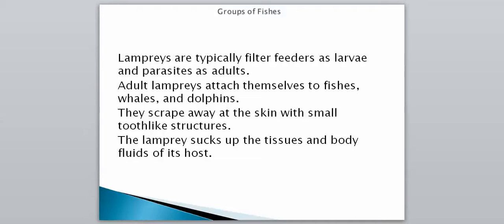Adult lampreys attach themselves to fish, whales, and dolphins, scraping away at the skin with small tooth-like structures. After scraping, they attach and suck up the tissues and body fluids of the host. Usually they aren't a big problem because they have predators. However, one type called the sea lamprey has invaded the Great Lakes in Michigan and similar areas, and they're a major problem because they're feasting on native fish species with no predators. We'll look at that problem more in-depth in class.